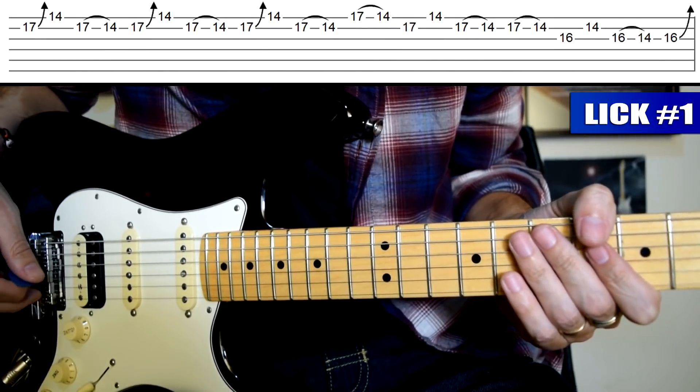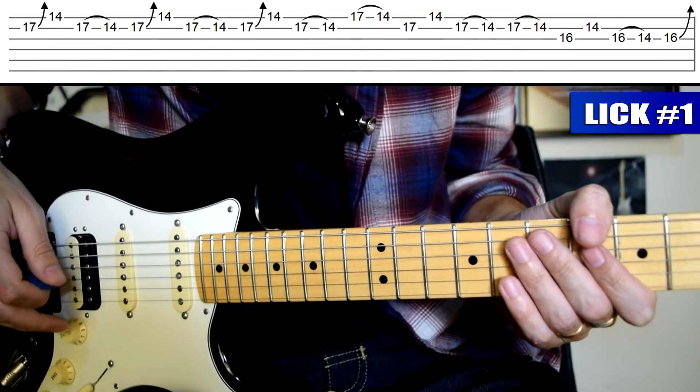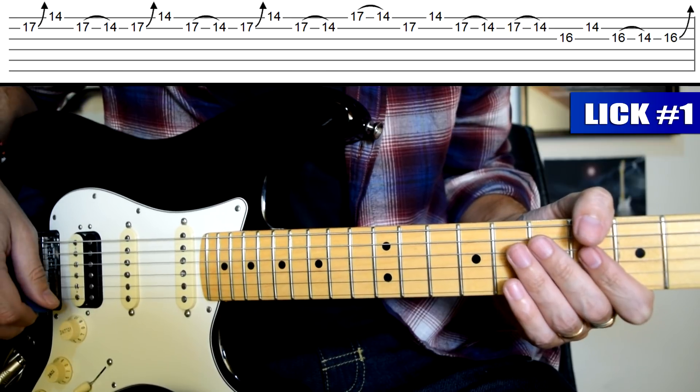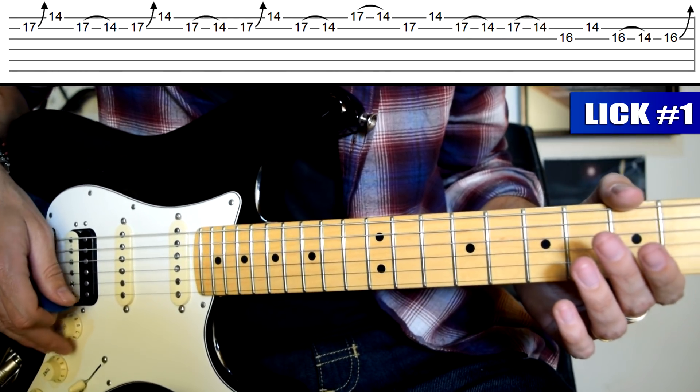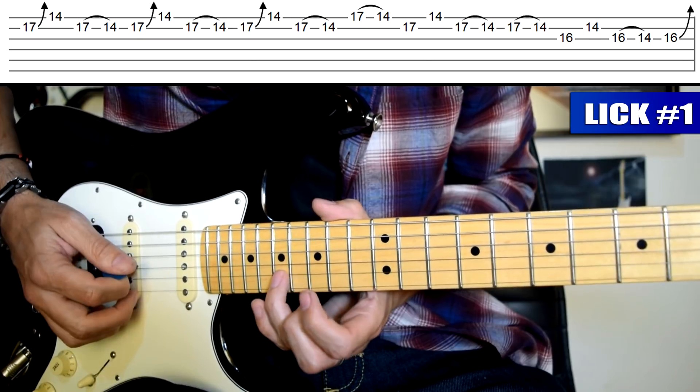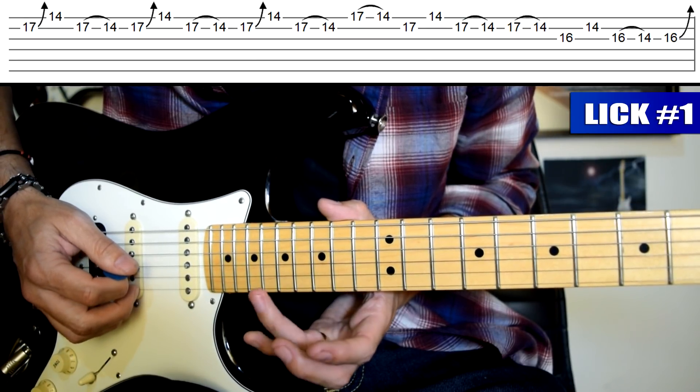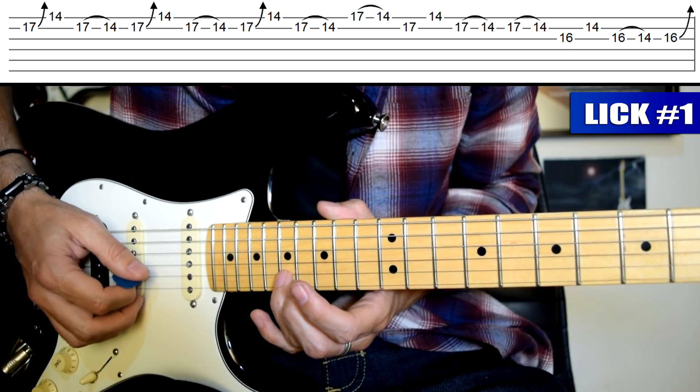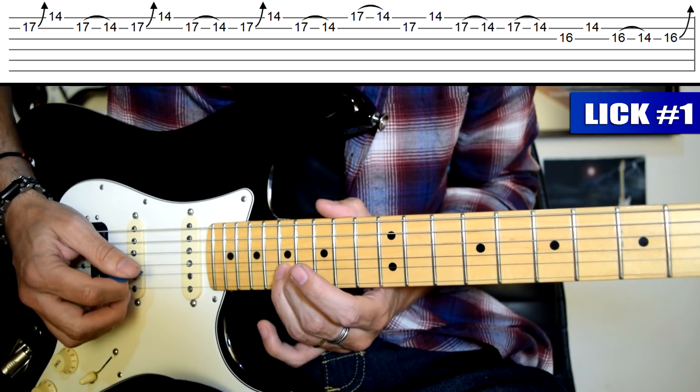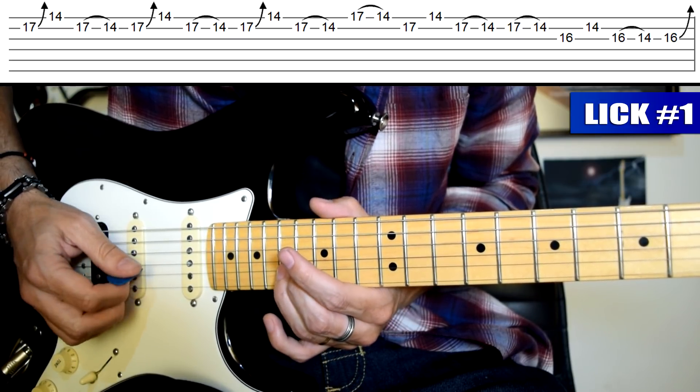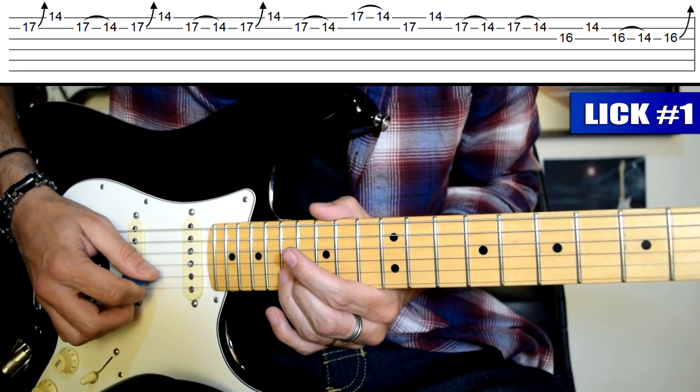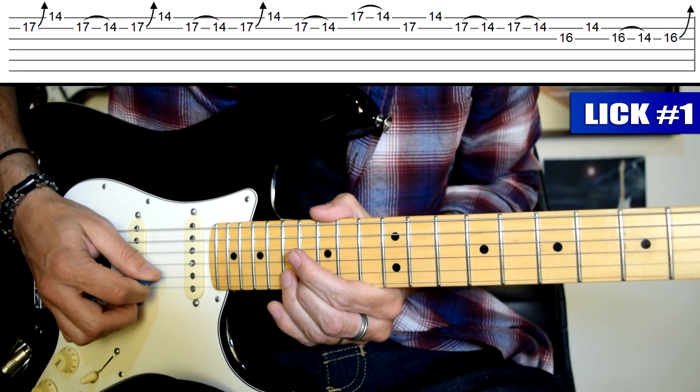Vamos a comenzar entonces con este primer fraseo que se basa en la escala pentatónica menor de Fa sostenido. Lo que vamos a hacer es comenzar con una estirada: dedo 3 traste 17 de cuerda 2, ayudado por dedo 2 en el traste 16 de cuerda 2. Púa abajo en cuerda 2, estiramos hacia arriba un tono.